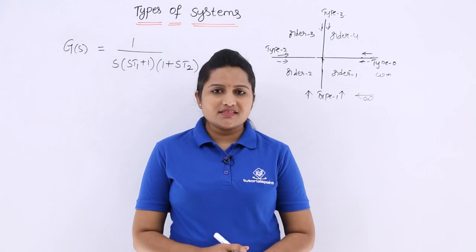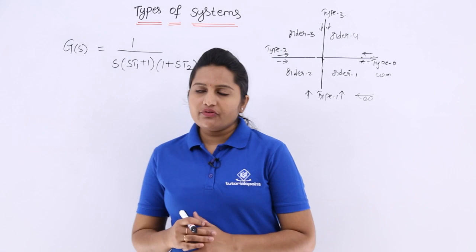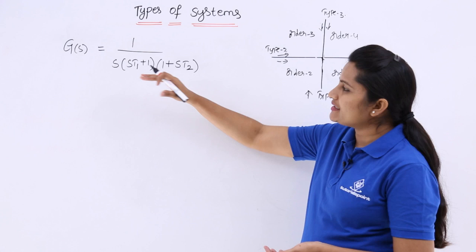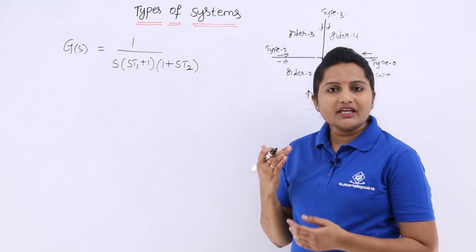In this video, we are going to discuss how to draw a polar plot or Nyquist plot for a type 1, order 3 system. The transfer function given is G(S) = 1 / [S(ST1 + 1)(1 + ST2)].